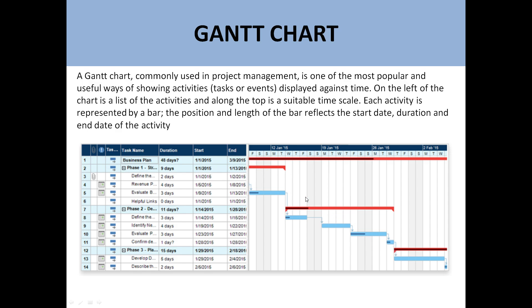Basically, in a simple way, the Gantt chart is a representation of your tasks with respect to the timeline, in the graphical representation of bars. Here is the calendar with dates — for example, Friday, Saturday, Sunday, Monday, Tuesday — and these bars represent your tasks with respect to the timeline.